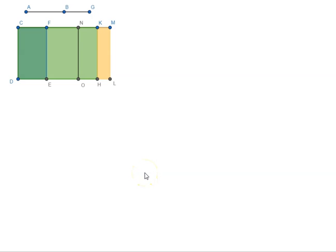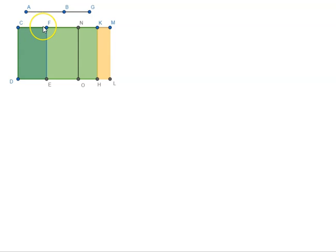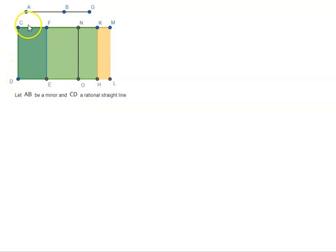Let us look at Proposition 100 of Book 10 of Euclid's Elements. The proposition says: the square on a minor straight line applied to a rational straight line produces as breadth a fourth apotome. So here, if AB is a minor and CD is a rational straight line, and we apply the square on AB to CD, we will get a breadth CF which is going to be a fourth apotome.